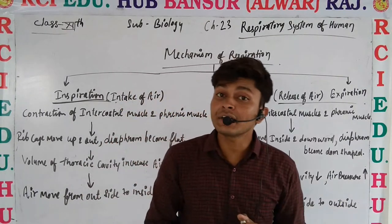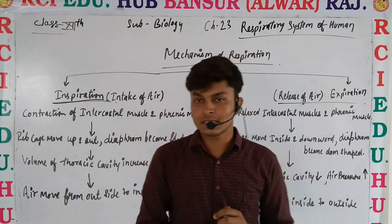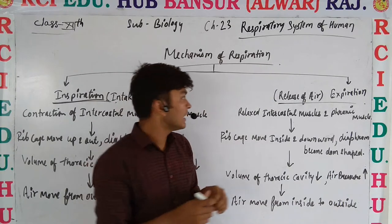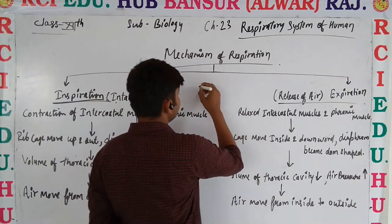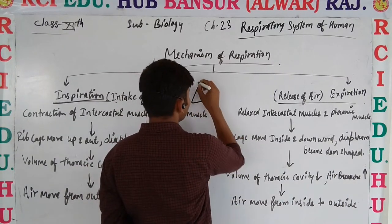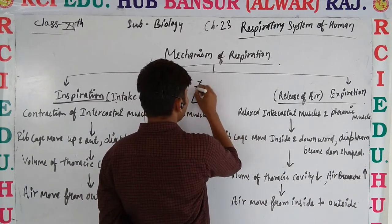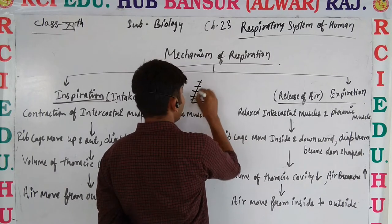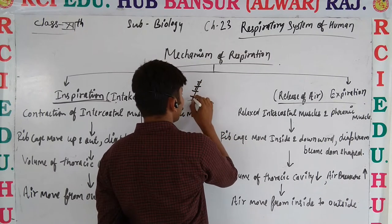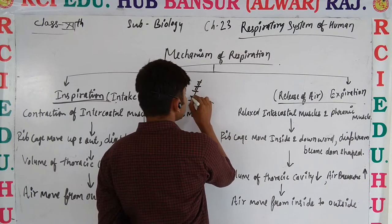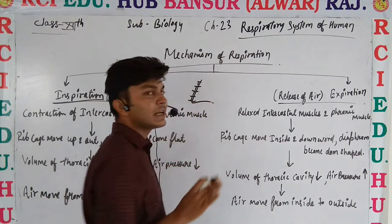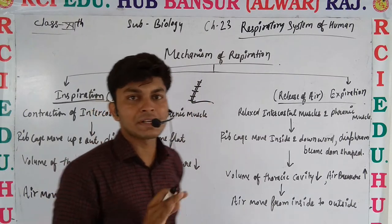These muscles are called the external intercostal muscles. The external intercostal muscles are key muscles involved in the process of inspiration.